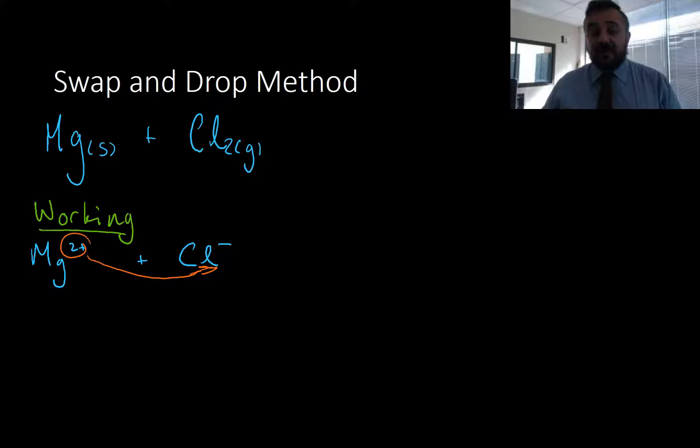And we do the swap and drop method. Which means we take the valency of one and drop it down low. And the valency of the other and drop it down low as well. Now, we need to number. It's just a minus. So, what it means is it's minus one. So, we need to number that and drop it down.